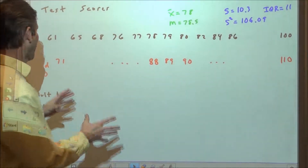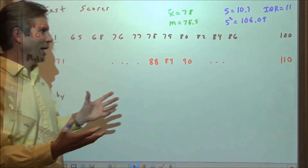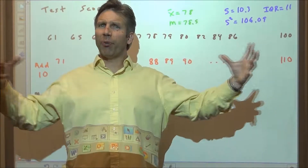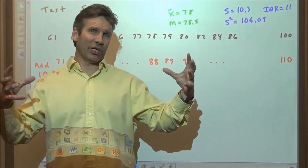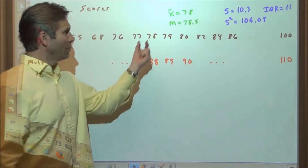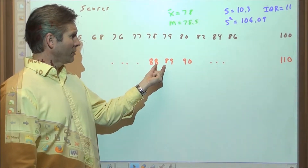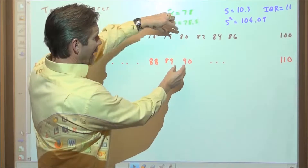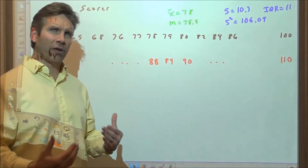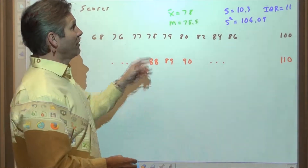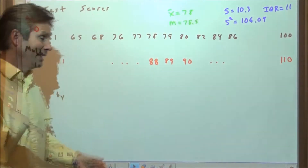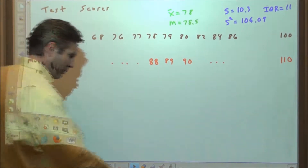If we added 10 — like we curved the test, we added 10 to all the scores — all the scores would move up by 10, but the spread between the scores will not change. The gap between adjacent scores is still 1. So those measures of spread have not changed when we add a constant to all the values of the variable, but the measures of center — the mean and the median — will both increase by 10.